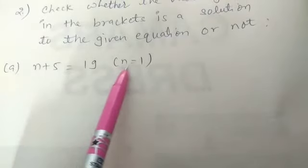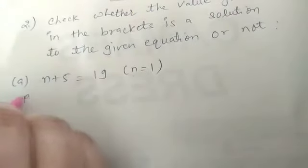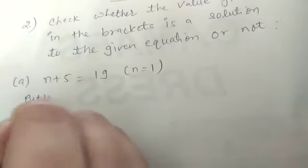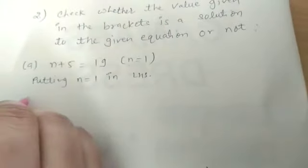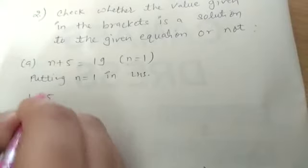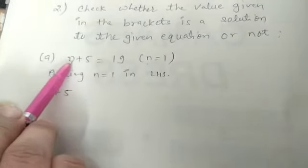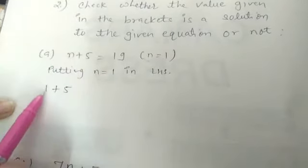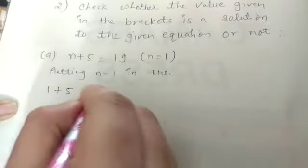We have to put n equal to 1 in LHS. So, we will write putting n equal to 1 in LHS. So, 1 plus 5. We will see that when we are putting 1 at the place of n, so 1, 5 as it is, 5 plus 1, 6.